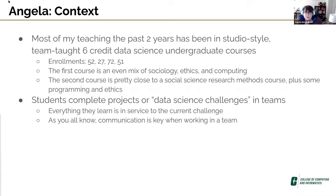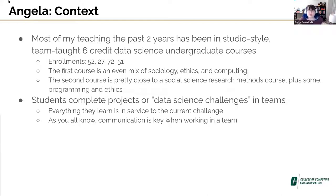I have the enrollments for the past four semesters to give you an idea of what we're working with — first course and second course alternating over fall and spring. The first course is an even mix of sociology, ethics, and computing; the second course is a social science research methods course plus programming and ethics. The overarching structure is that students are completing large-scale data science challenges in teams, and everything in the course is in service to that larger project. Communication obviously matters when you're working with a team, so that's how this fits in.